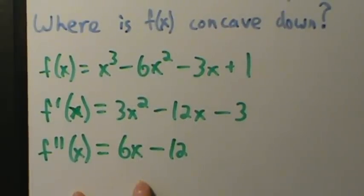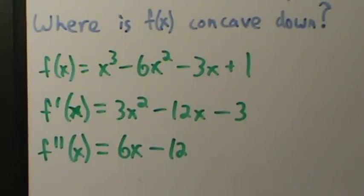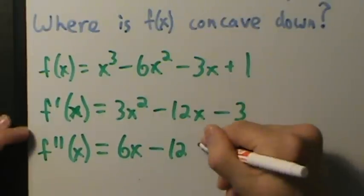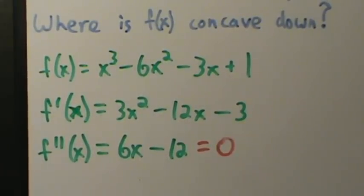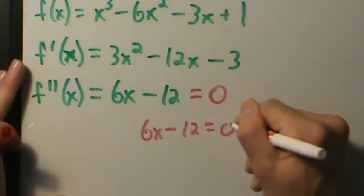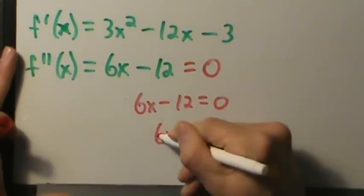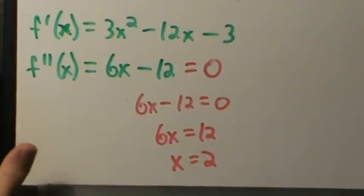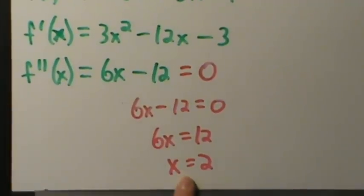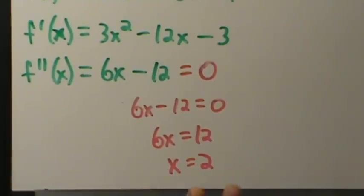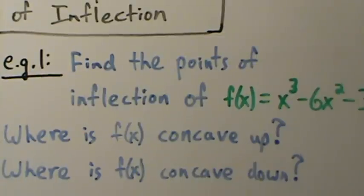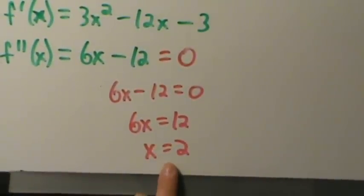Now we find where the second derivative is zero or undefined — exactly what we did with increasing/decreasing functions but with the second derivative. Setting 6x - 12 = 0 gives 6x = 12, so x = 2. We should be careful: unlike critical points with the first derivative, we can't yet call this a point of inflection. We first have to confirm that the concavity actually changes at x = 2.